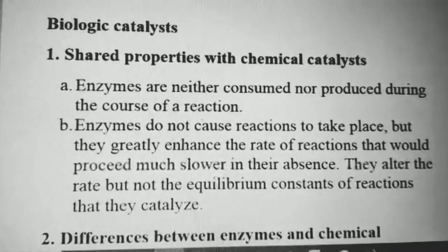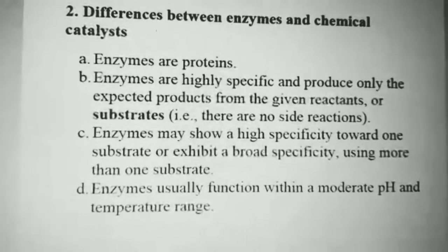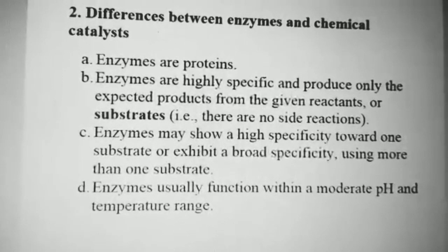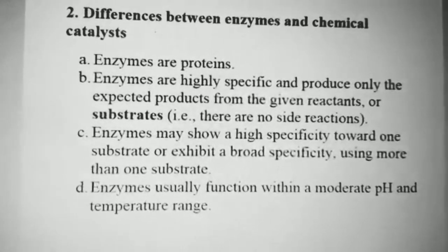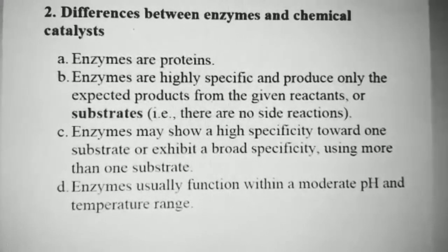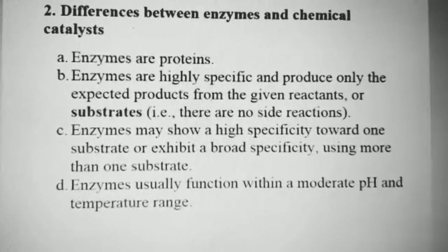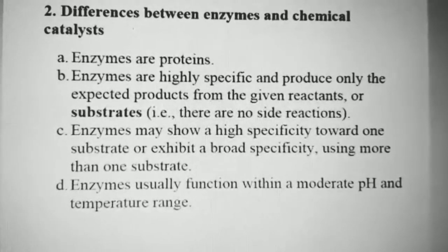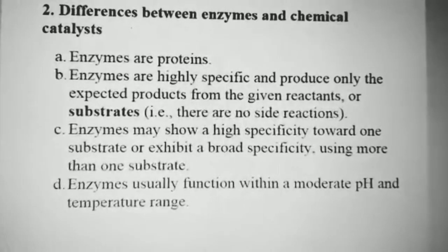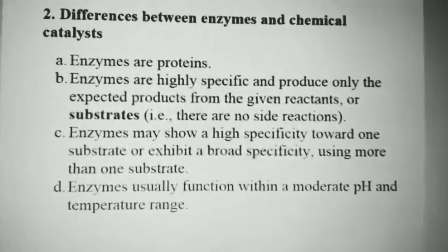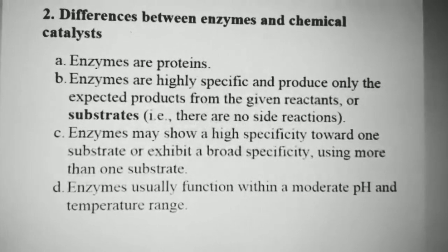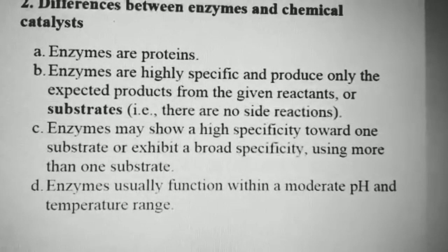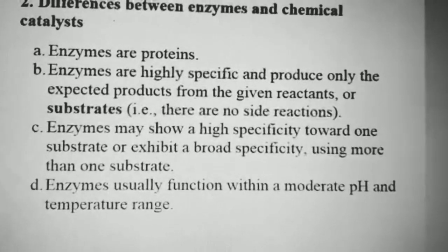Now we will discuss the differences between enzymes and chemical catalysts. Enzymes are made up of protein, but catalysts used in the laboratory are not. Enzymes are highly specific and produce only the expected products from given reactants or substrates. The reactant with which an enzyme reacts is called its substrate, and every enzyme has a specific substrate — there is no side reaction.